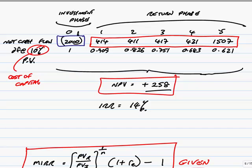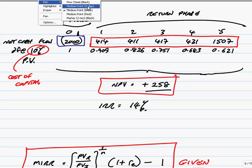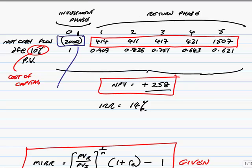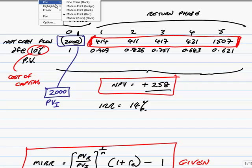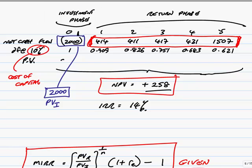So that's what we mean. And for the formula, we need the present values of each at the cost of capital. Well, we've already done all the work. We've done the discounting at the cost of capital, and so the present value of the investment phase is 2,000. The present value of the return phase, well, we've done the discounting. Here are our returns.